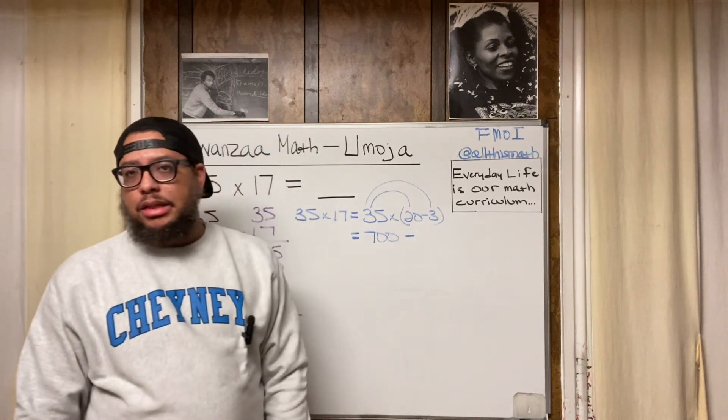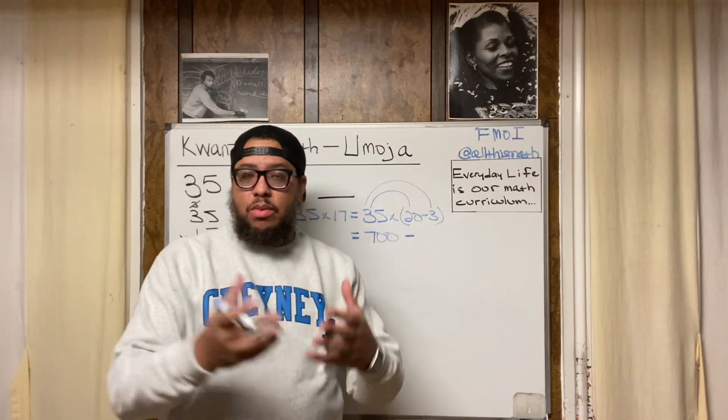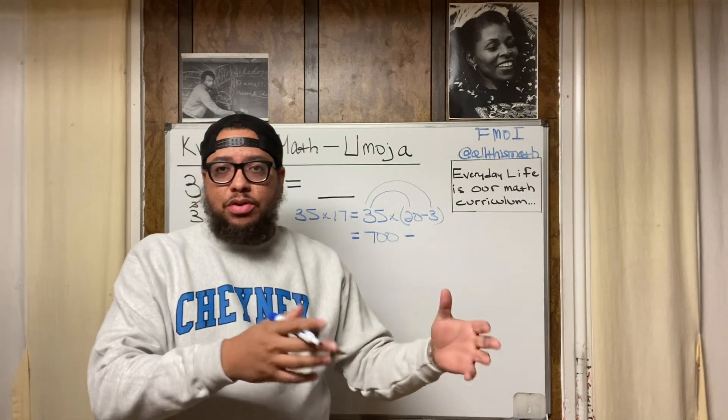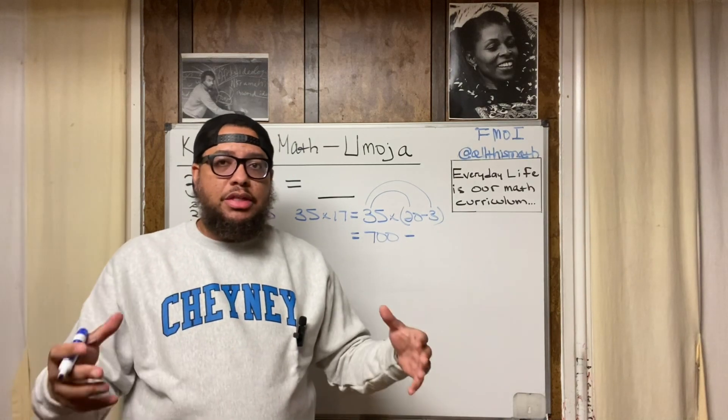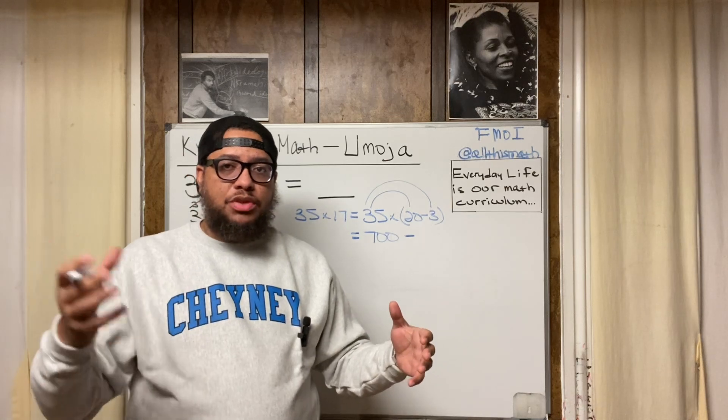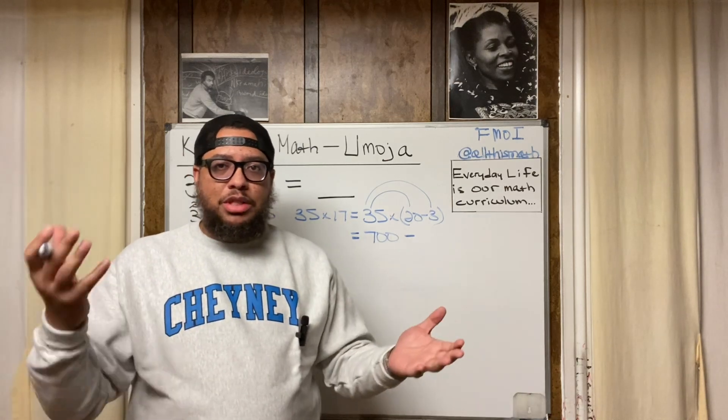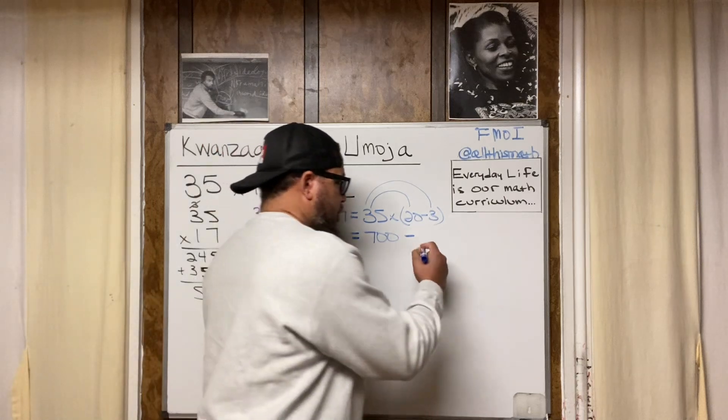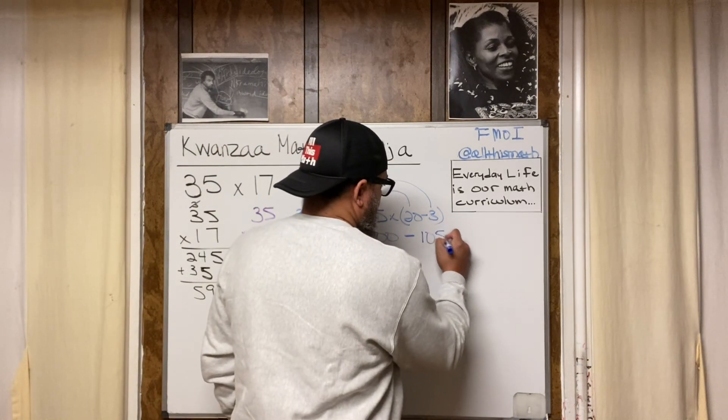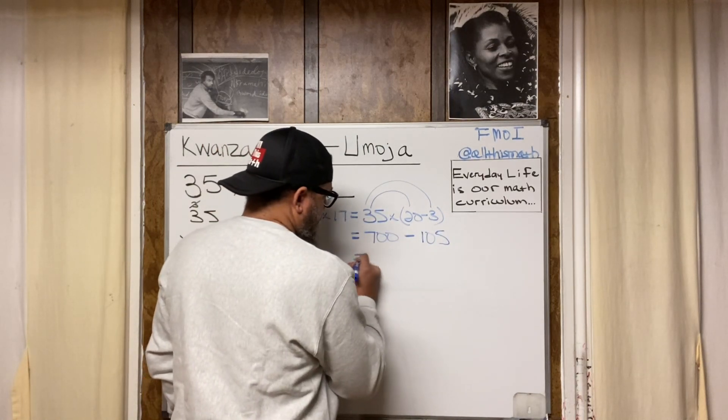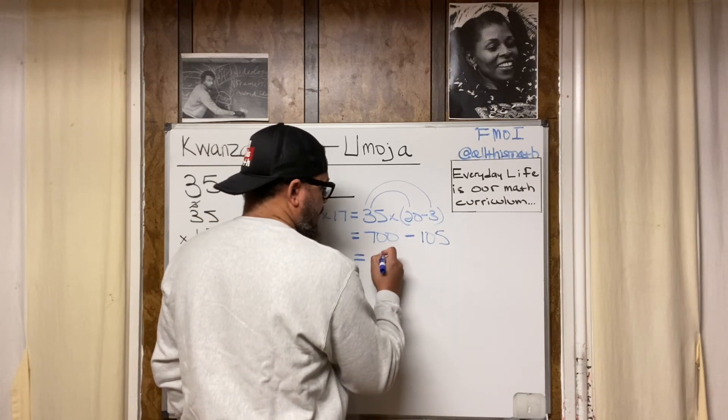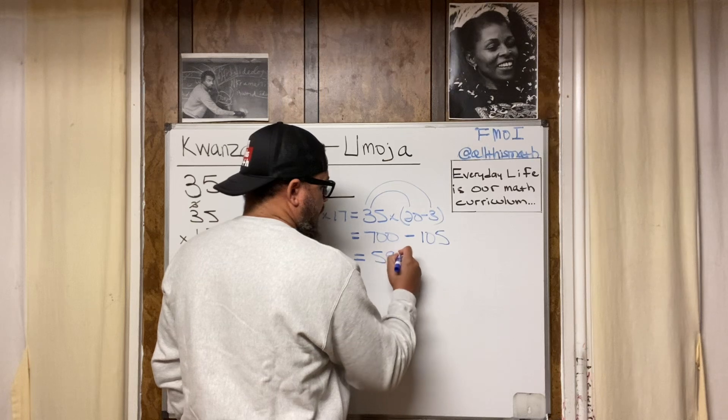35 times 3 is, again, what I would do if I'm doing this mentally, I'm breaking that 35 down into two parts. 30 and 5, 30 and 5. 30 times 3 is 90. 5 times 3 is 15. Then I do 90 plus 15. 90 plus 15 is 105. So that's minus 105. So that's 700 minus 105. So I'm doing 700 minus 100, which is 600. Then I'm doing 600 minus 5, which is 595.